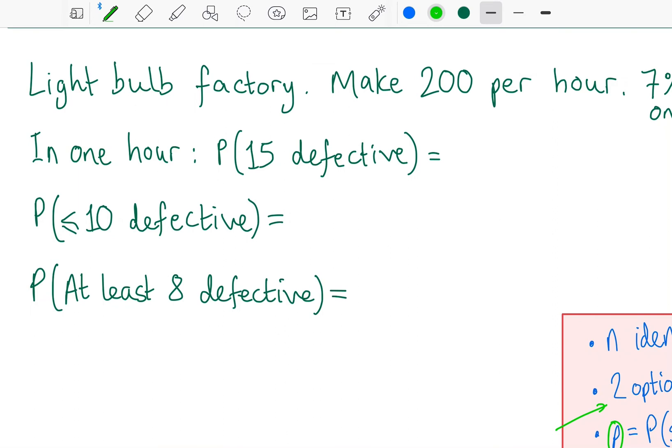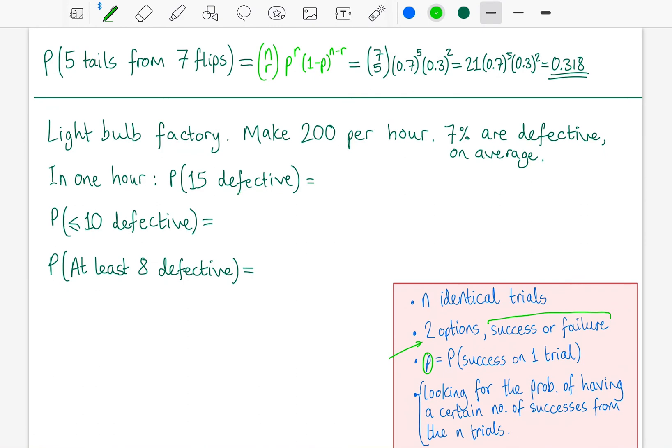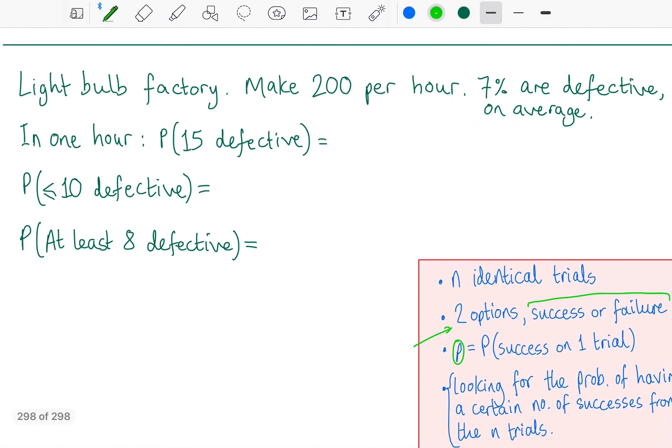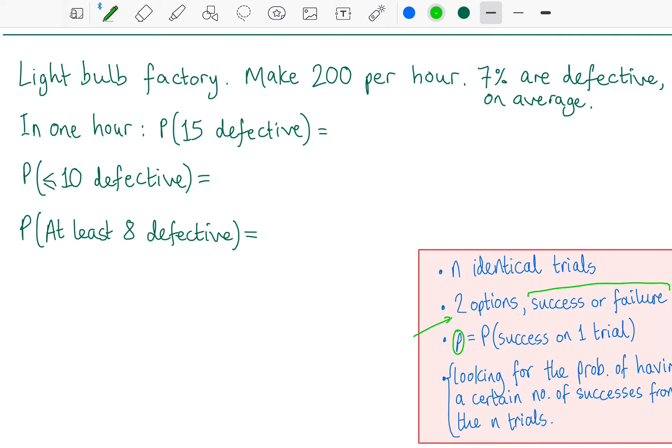And that's especially true in this final example. Because I'm going to be looking for defective light bulbs, but I'm still going to consider the success in a way. So I have a light bulb factory, and we make 200 light bulbs per hour. But on average, 7% of them turn out to be defective, they get broken. So in an hour, I want to know the probability of getting 15 defective light bulbs. So I'd use my formula from above. And the probability of a defective one, 0.07, 7%. And I want 15 of those. But the probability of a good light bulb, 0.93. And I'm going to need 185 of those.